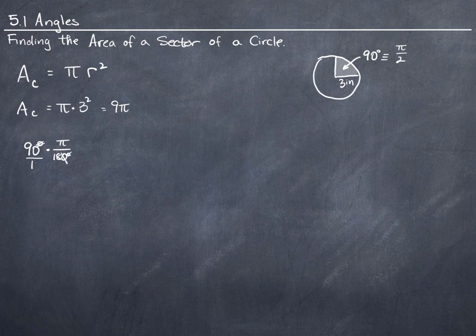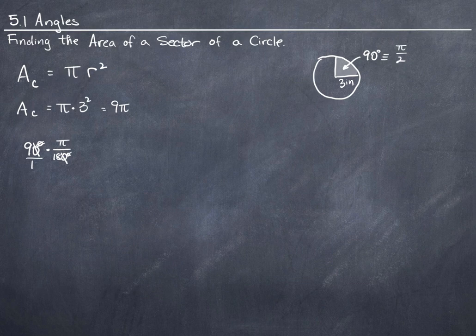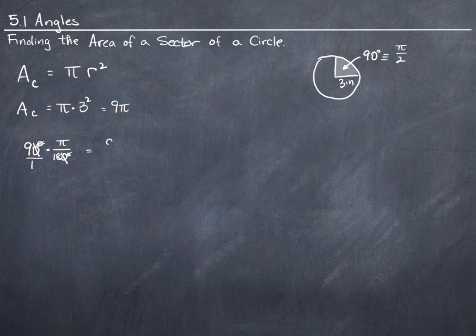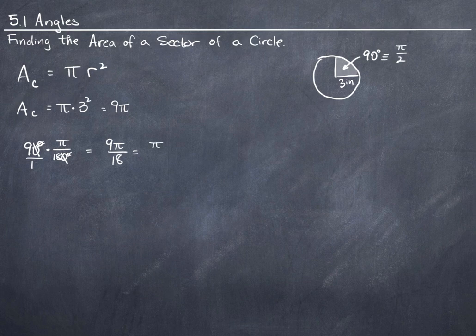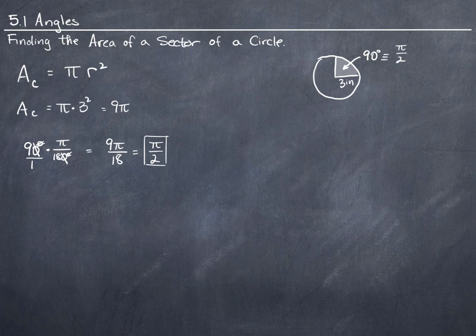If I divide the top and the bottom by 10, I get 9 over 18. So I have 9 pi over 18. Let's go ahead and write that. But then also, 9 goes into 9 and 18. It goes into 9 once, and it goes into 18 twice. So 90 degrees is equivalent to pi over 2. That's how I got this information.